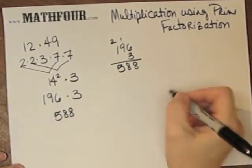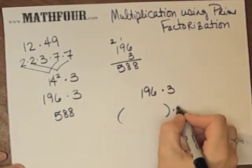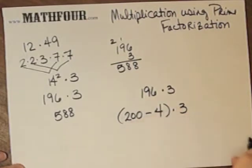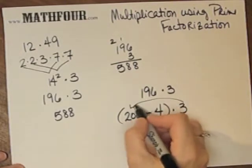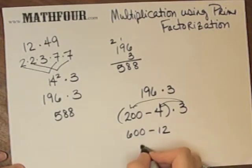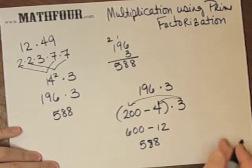Notice I can also take this 196 times 3. This is a little bit of distributive property for you. 196 is 200 minus 4. I can distribute the 3 over this and have 600 minus 12, which gives us 588.